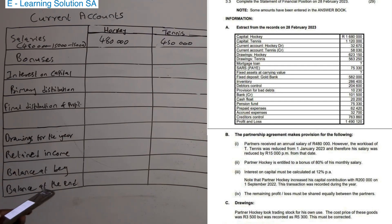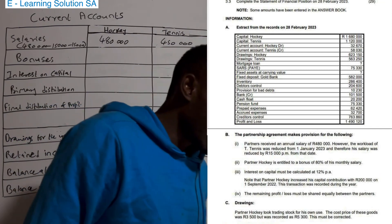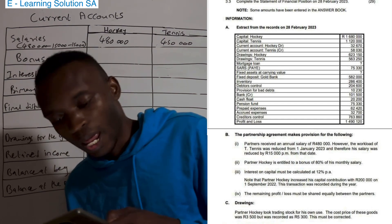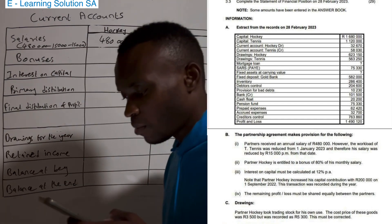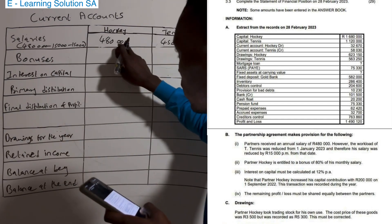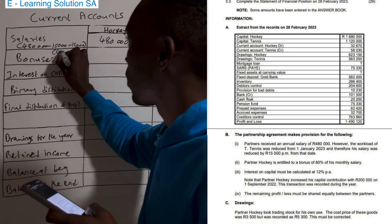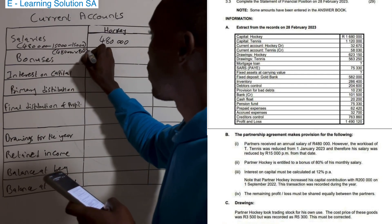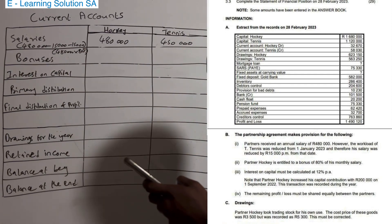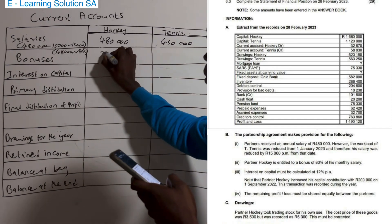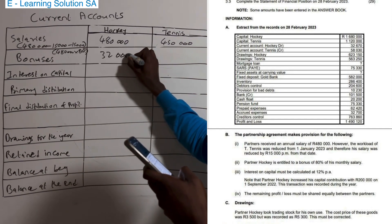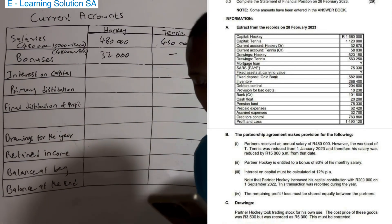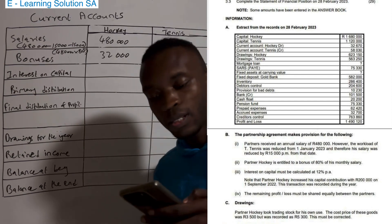The next item is bonus. Partner Hooky is entitled to a bonus of 80 percent of his monthly salary. So we calculate 80 percent of Hooky's monthly salary figure, which gives us 32,000. The other partner, Tennis, has nothing mentioned about a bonus, which means there is no bonus for Tennis.